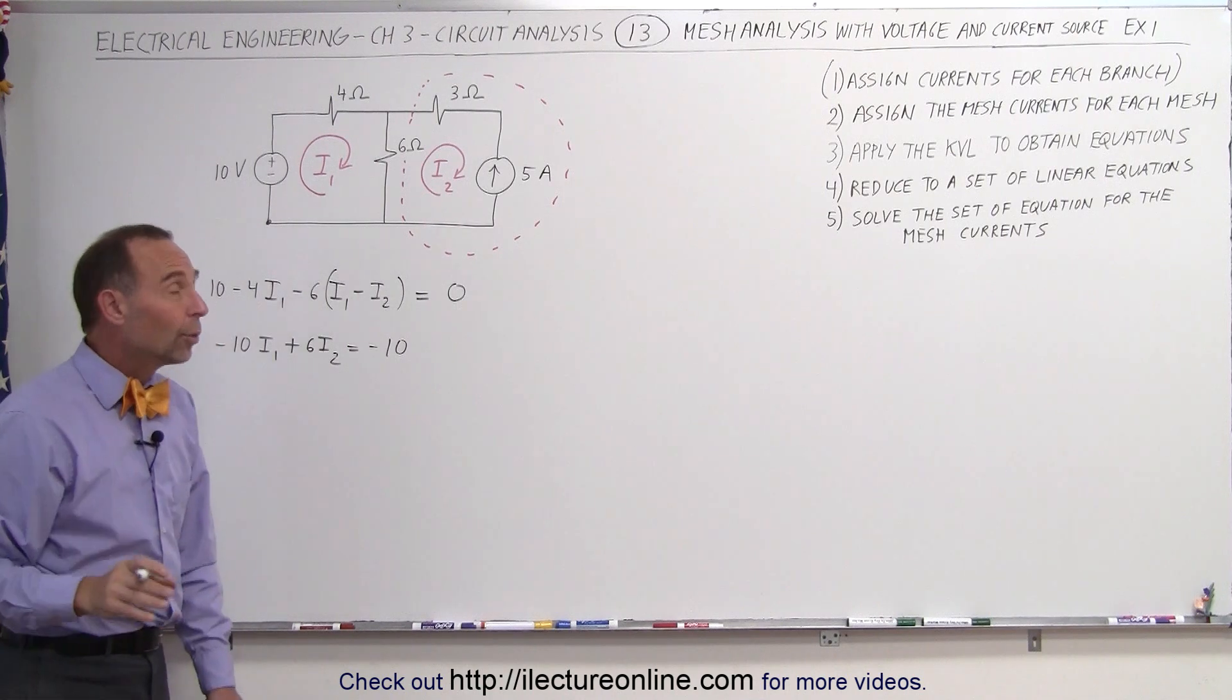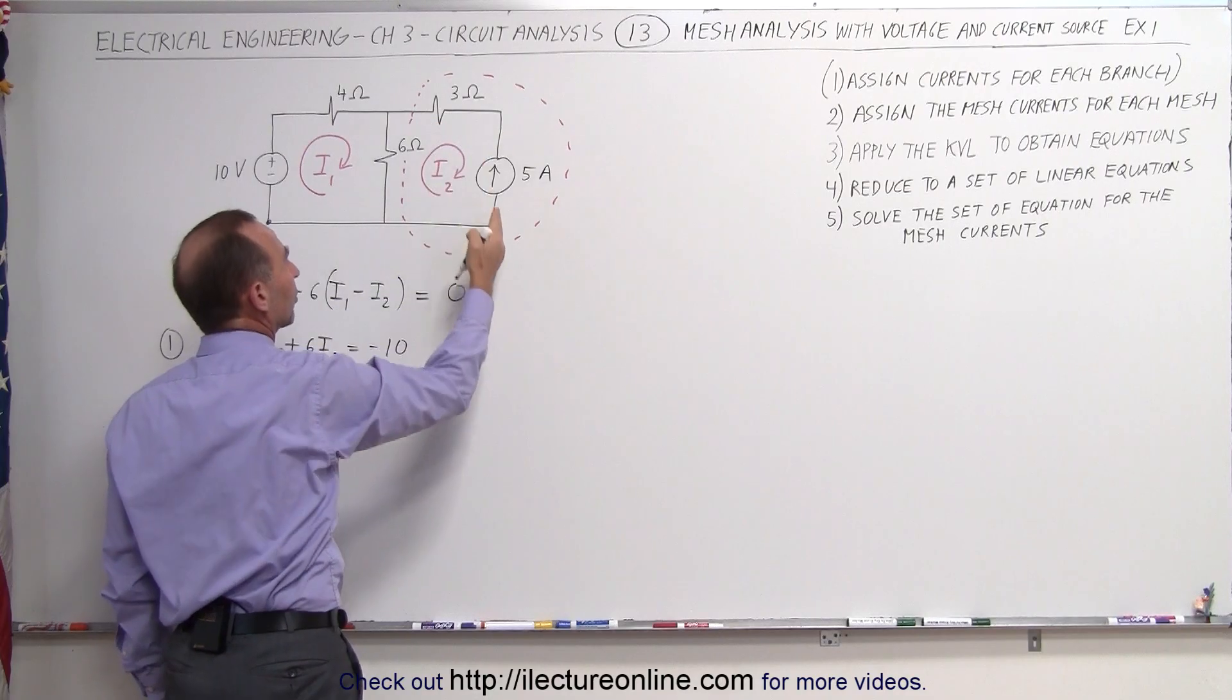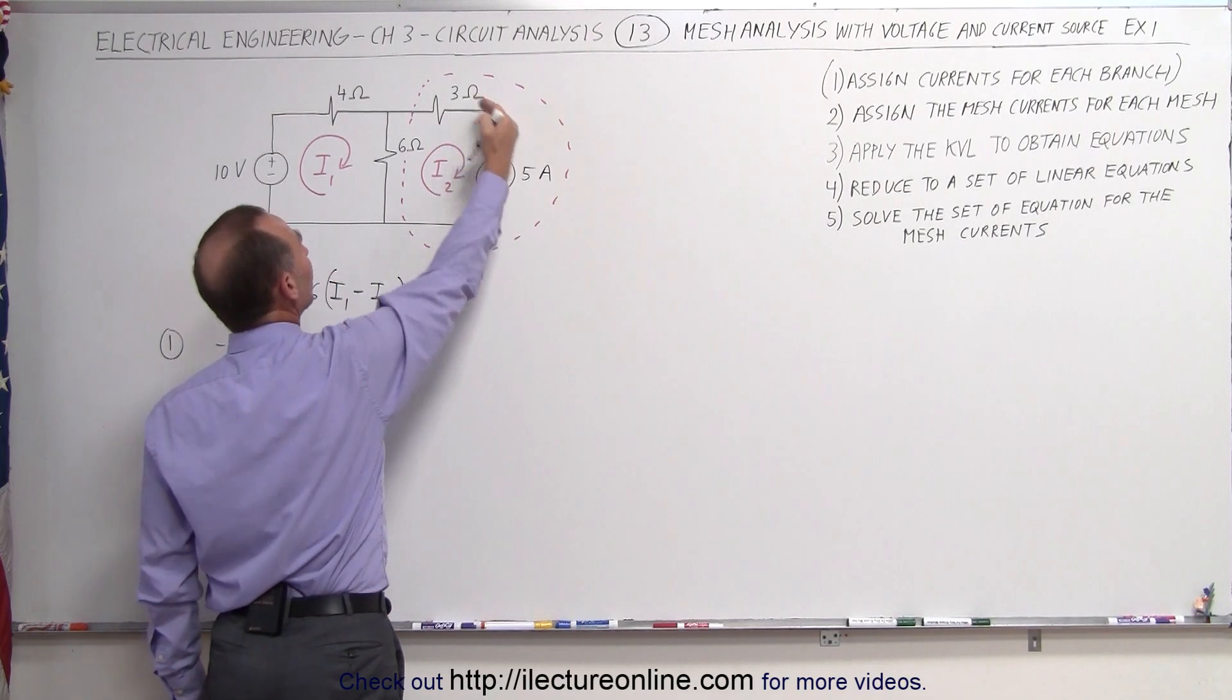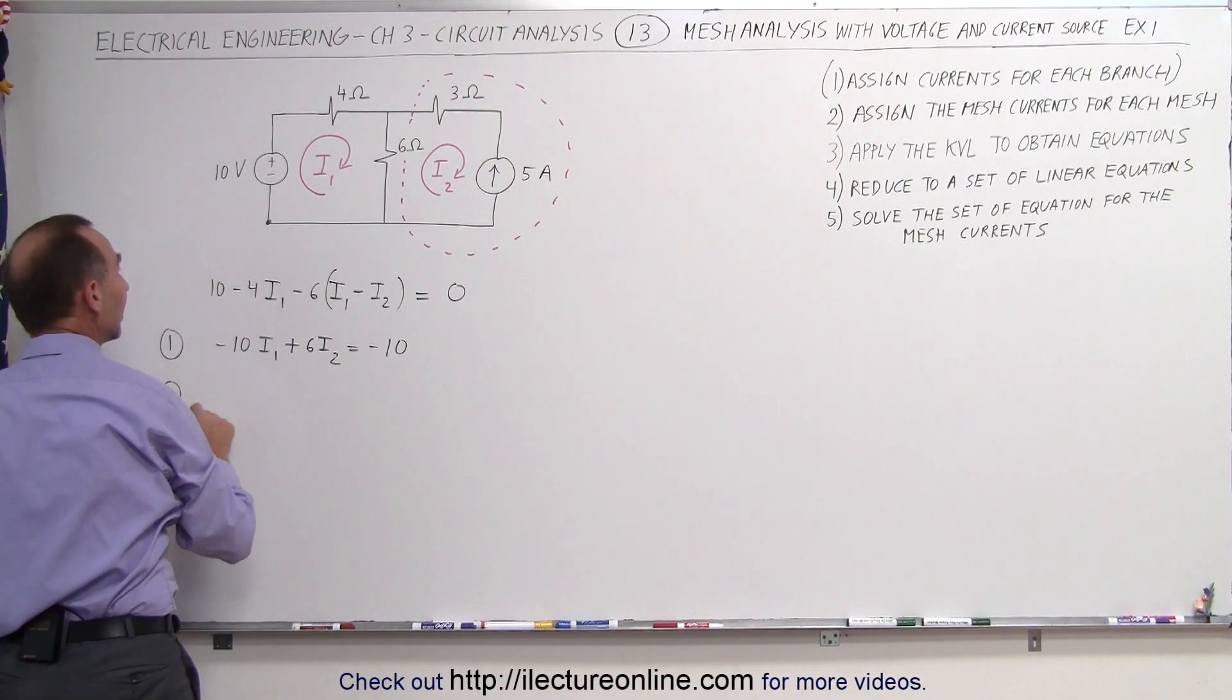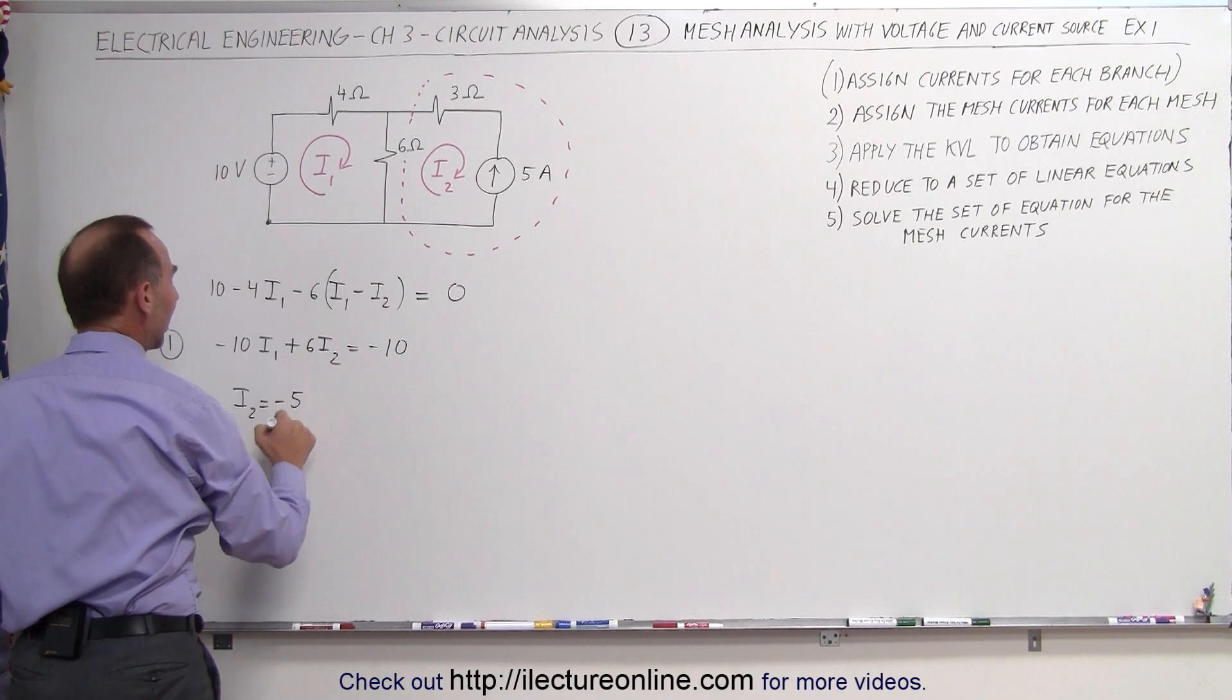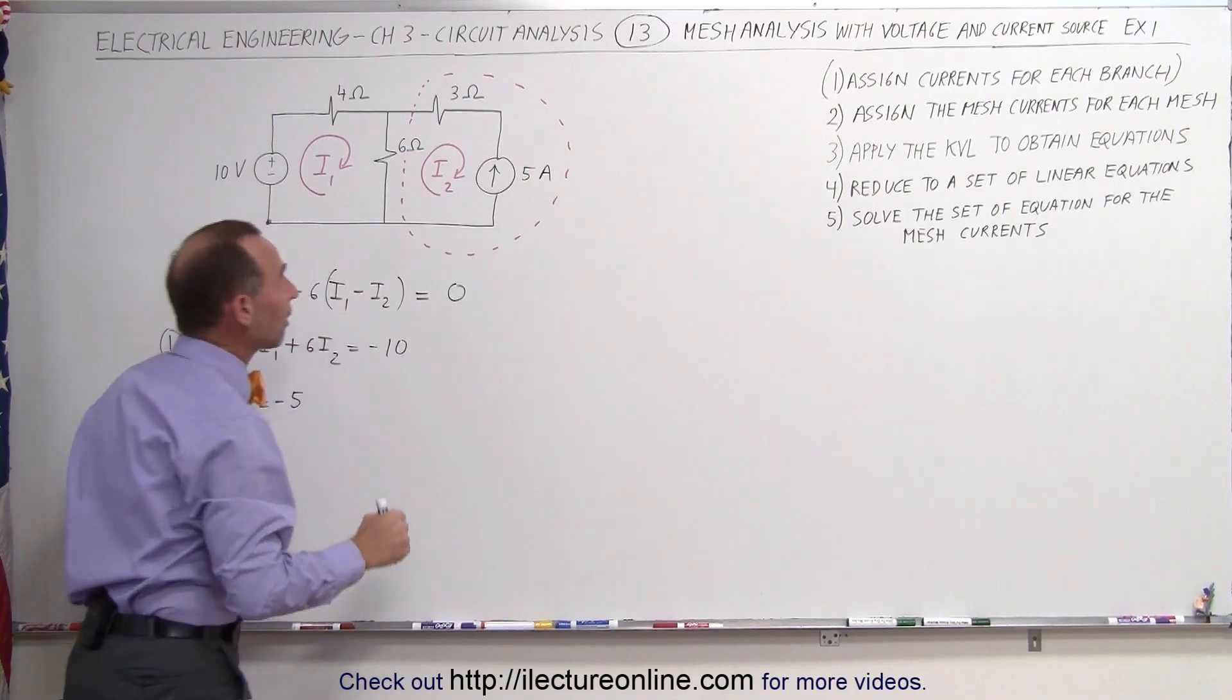Now in our second equation, notice that even though we have drawn our mesh current I2 in a clockwise direction, we have a current source that forces a 5 amp current in this branch in the opposite direction, which means for our second equation, we can say that I2 is equal to minus 5 amps, because 5 amps in the opposite direction relative to the direction of I2.